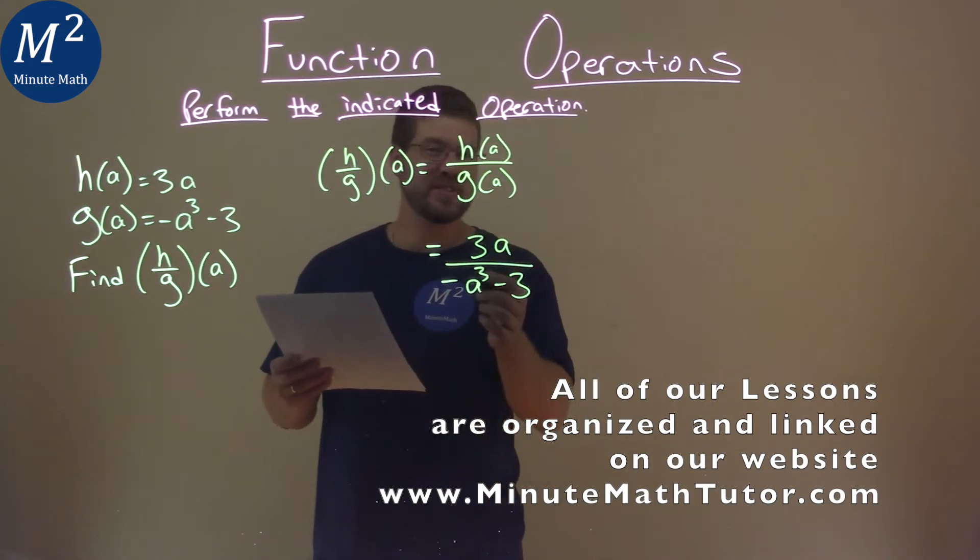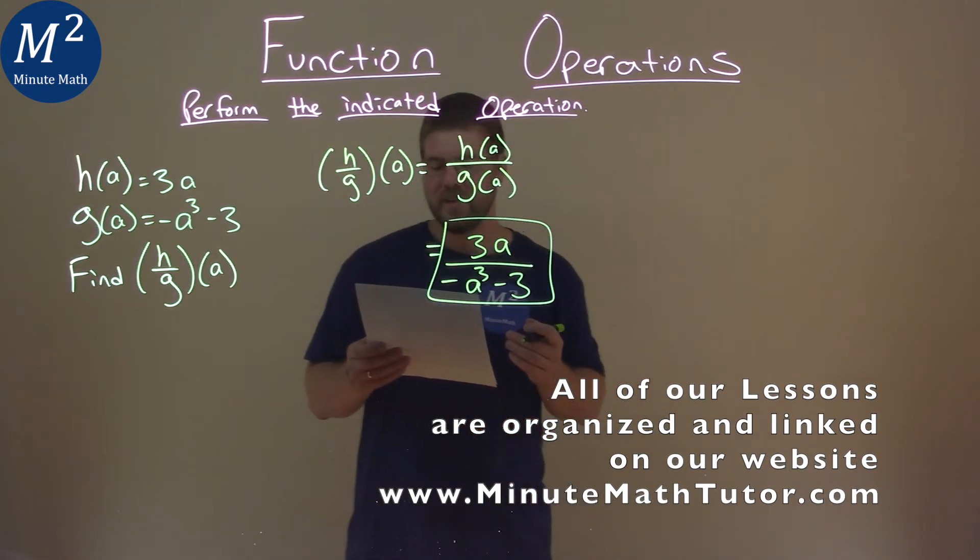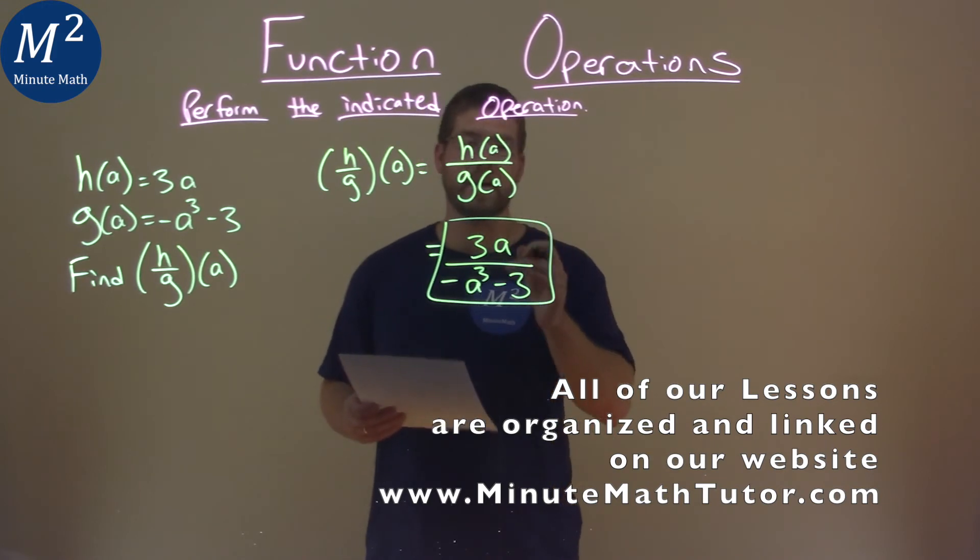And this actually can't simplify anymore. And so our final answer here is just 3a over negative a to the third power minus 3.